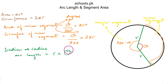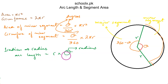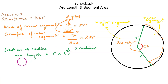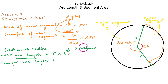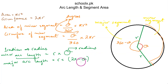This arc length formula r × θ is applicable only when the angle is in radians. You can convert between degrees and radians as needed. For the major arc length when working in radians, we use r × (2π − θ). For the area of the minor sector in radians, we use ½r²θ, and for the area of the major sector, we use ½r²(2π − θ).